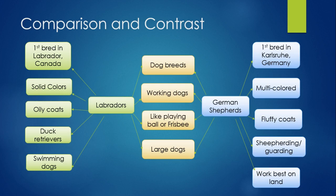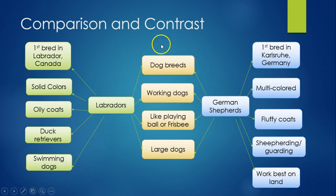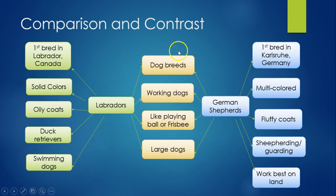One more thing on comparing and contrasting — I'm not expecting any essays on puppy dogs, but this is just an example to illustrate the difference between comparing and contrasting. Say you were writing an essay on Labradors versus German Shepherds. The first thing you want to look at is what they have in common. You'll see in this row where my cursor is the things they share: they're both dog breeds, both types of working dogs, both tend to like playing ball or frisbee, and both are large dogs.